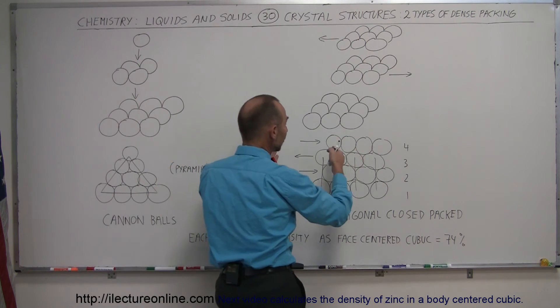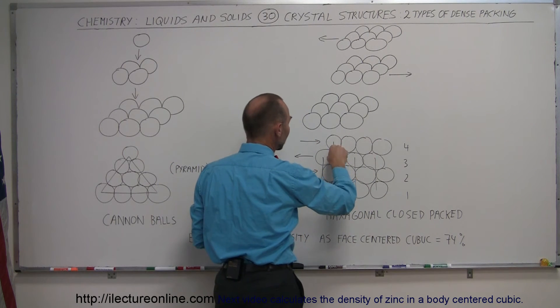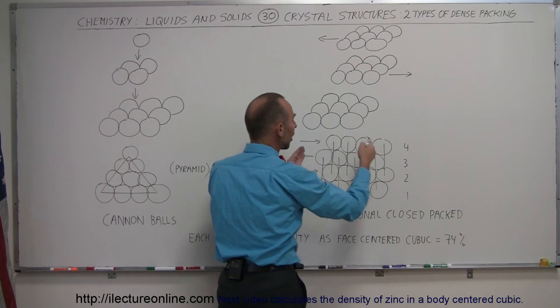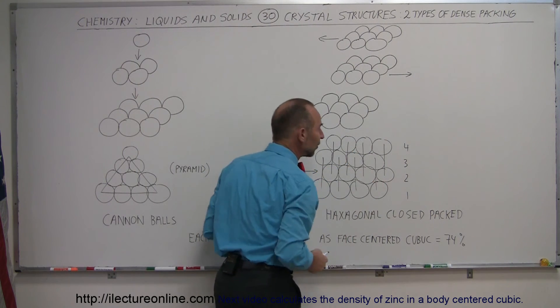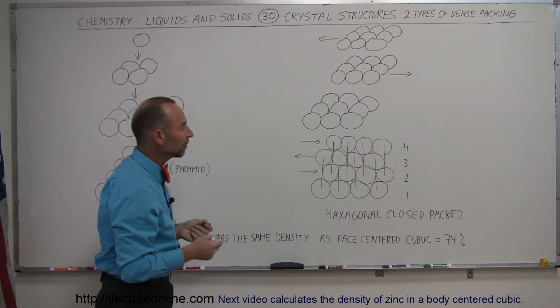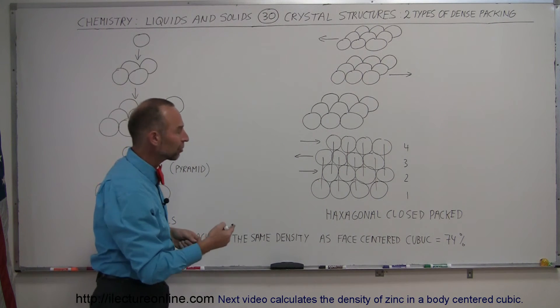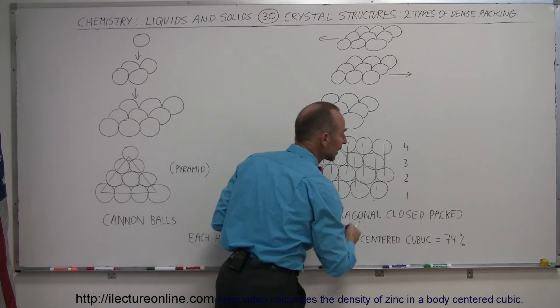And then the fourth layer is moved to the right again in such a way that the fourth layer is situated exactly above the second layer, and so forth, so that every odd layer is perfectly aligned with one another, and every even layer is perfectly aligned with one another. And that's called the hexagonal closed packing arrangement.